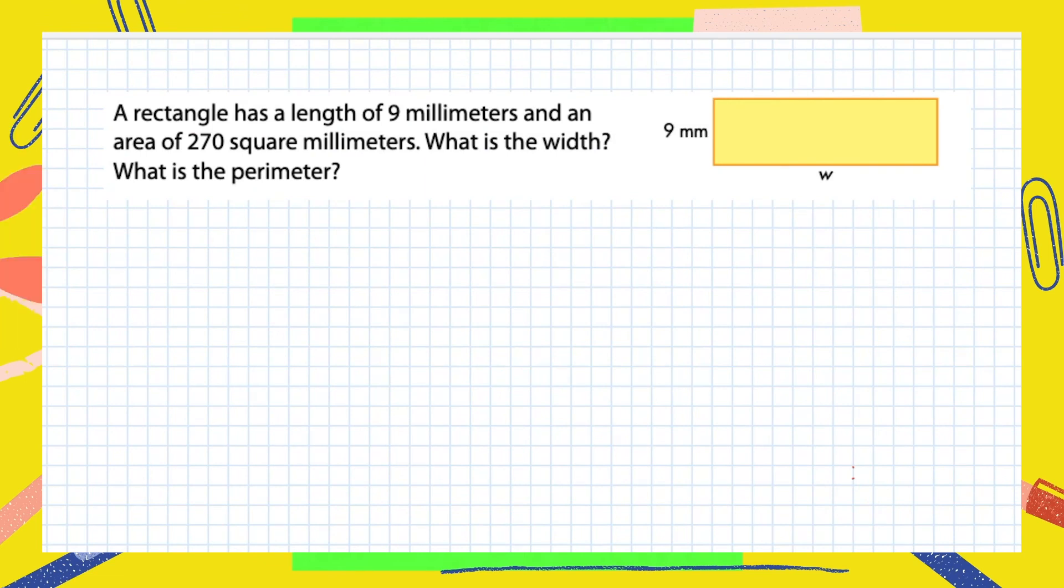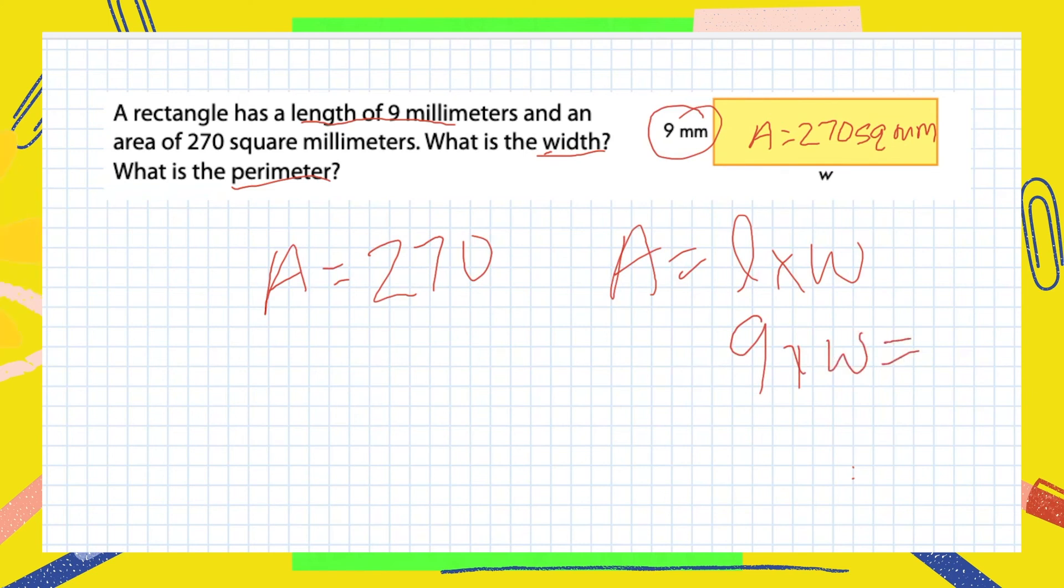We have time for one more problem so let's put what we know about perimeter and area together. Let's take a look. A rectangle has a length of 9 millimeters and an area of 270 square millimeters. What is the width and what is the perimeter? Hmm okay, so let's take a look at what we know. We know that the area is 270 and we also know that the length of this figure is 9 millimeters. If the formula for area equals length times width, I know that 9 times W is going to get me 270.